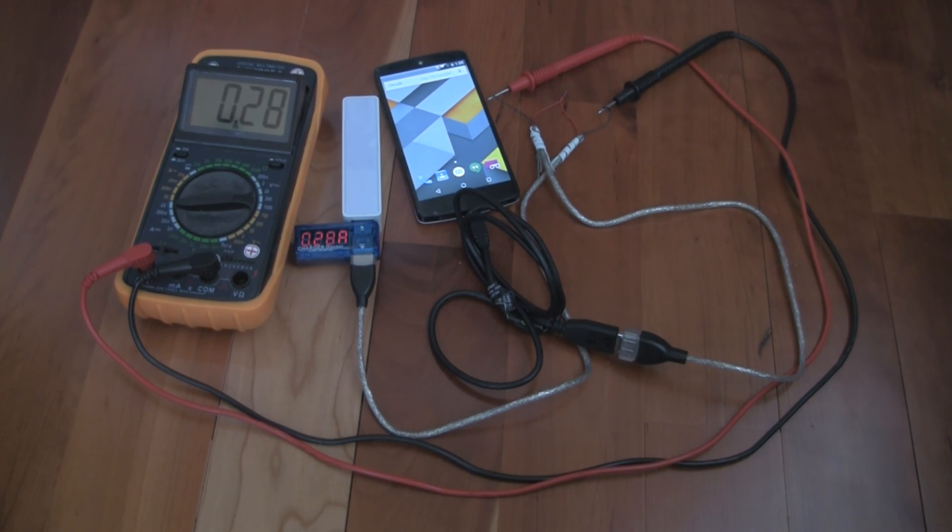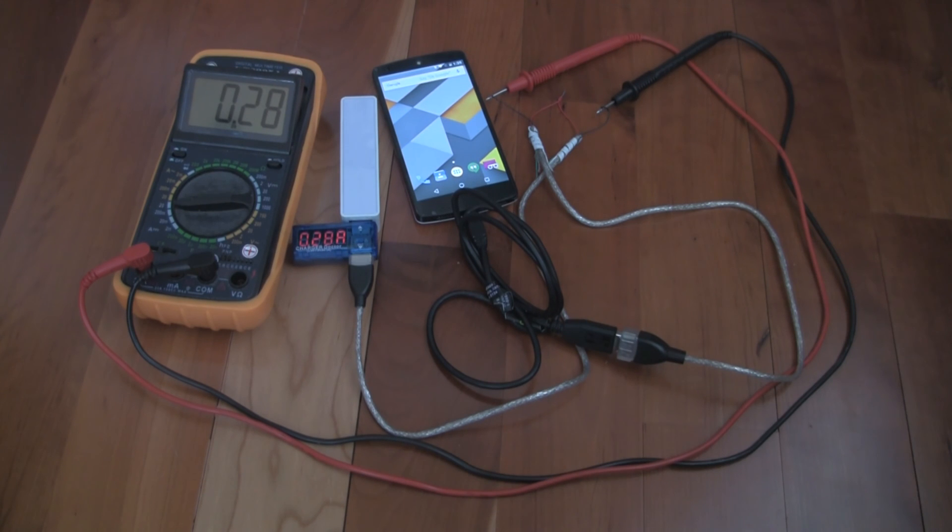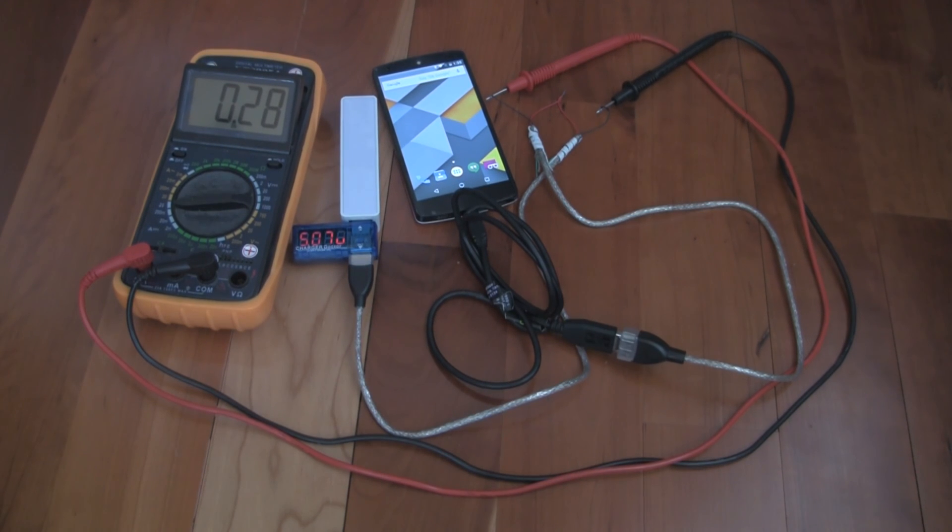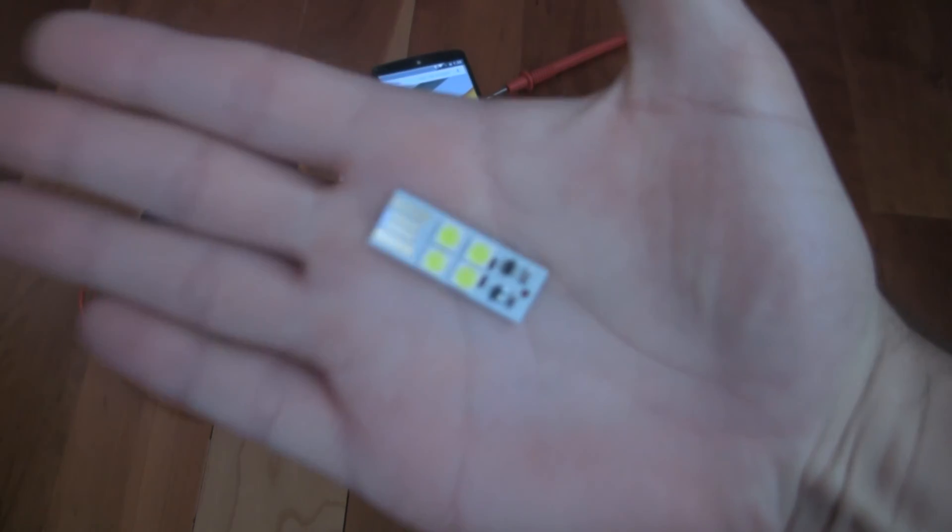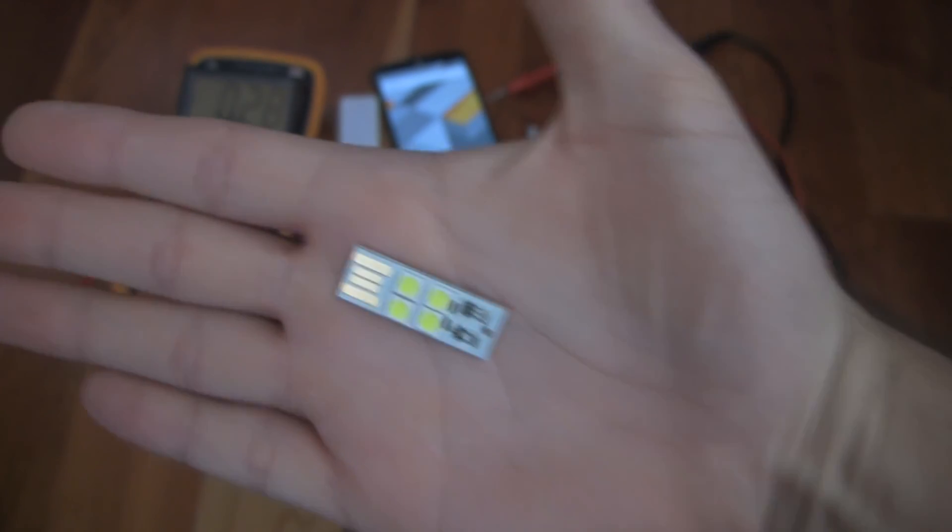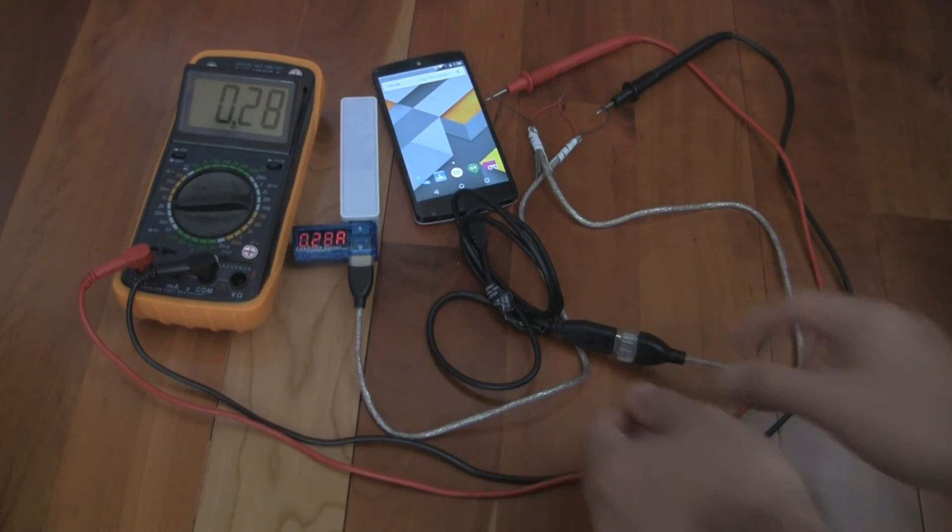So now that we can see it's very accurate, it's reading exactly how the multimeter is reading, 0.28 amps. What we're going to do now is change the load. So I have a small USB flashlight. It draws very little. Let's see if something changes here.